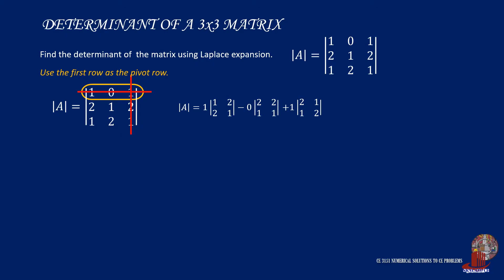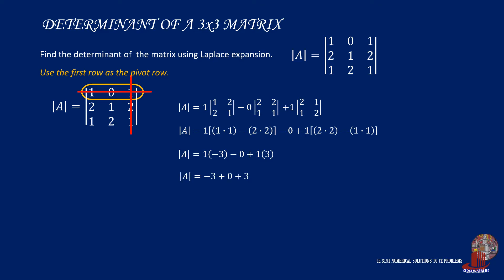Solving the sub-determinants: the first term is 1 times the quantity of 1 times 1 minus 2 times 2. The second term is taken as 0 since the determinant is multiplied by element 0. The third term is 1 times the quantity of 2 times 2 minus 1 times 1. Simplifying all three terms gives 1 times negative 3, minus 0, plus 1 times 3, which computes to 0.